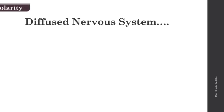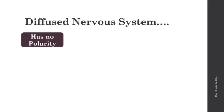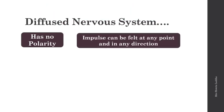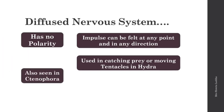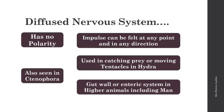This type of nervous system is called a diffuse nervous system because it is diffused everywhere. It has no polarity — impulses can be felt at any point and in any direction, unlike higher animals where signals travel from sensory to central nervous system and then to motor. This is used in catching prey or moving tentacles in Hydra. A similar diffuse nervous system is also seen in Ctenophora and in the gut wall of higher animals like humans.